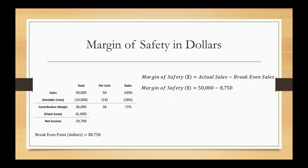Our break-even sales is $8,750, meaning we would have needed $8,750 in sales to cover our costs. The margin of safety is the difference between those two values, which ends up being $41,250 — the amount we are over our break-even point.